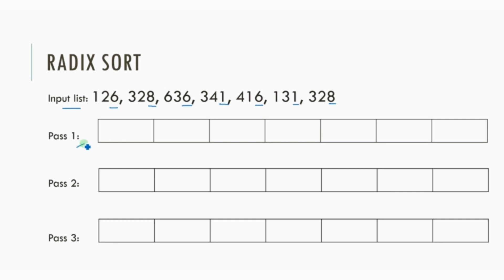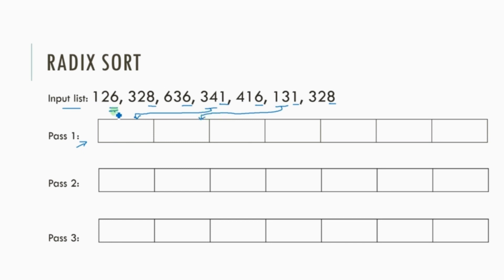In the sorted list, the number with the smallest key will come first. So 341 will come first, 131 will come second, 126 will come third, and so on. We can fill up this list accordingly.